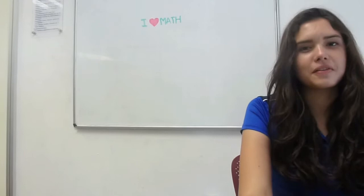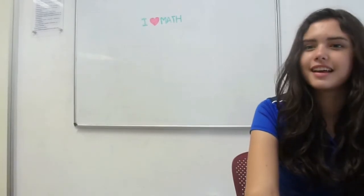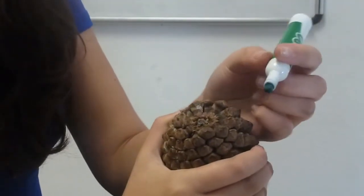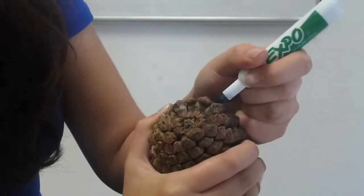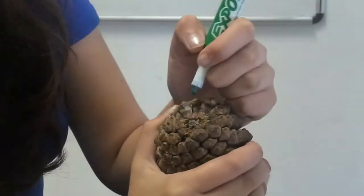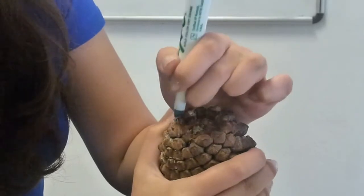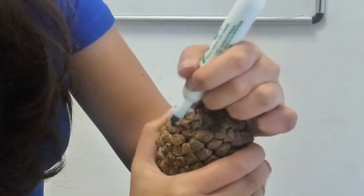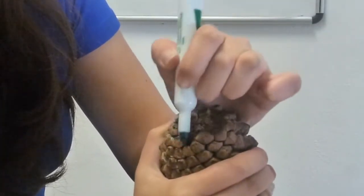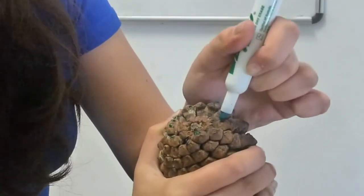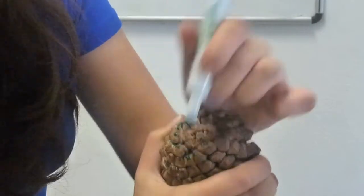An example of Fibonacci numbers in nature is the pine cone. For example, if we count one sequence, here we have one, two, three, four, five, six, seven, eight, nine, ten, eleven, twelve, thirteen — which is a Fibonacci number.